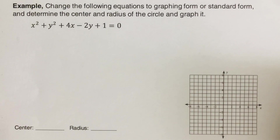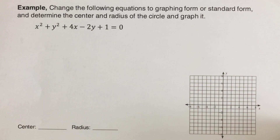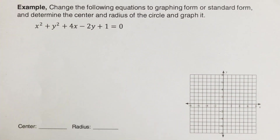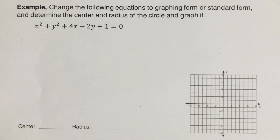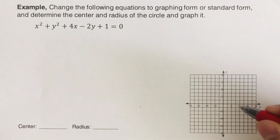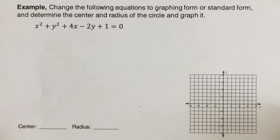To better understand how we change a general form to a graphing form or standard form, let's have this first example. We are given this general form, and looking at this equation it would be difficult for us to determine the center and the radius since it is not in standard or graphing form. We are going to go through these steps so we can easily determine the center and the radius of the circle and graph it.